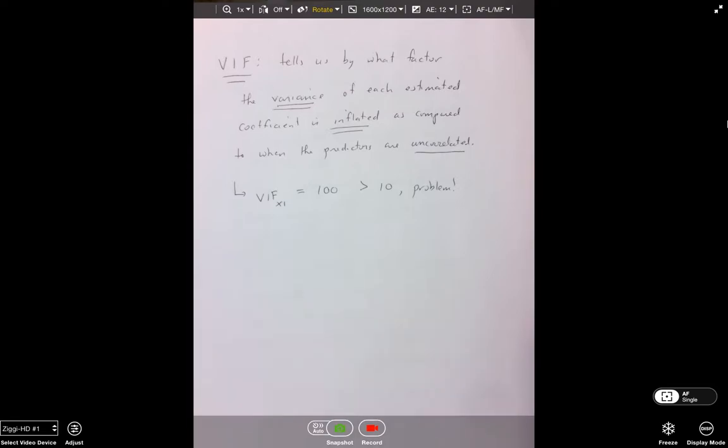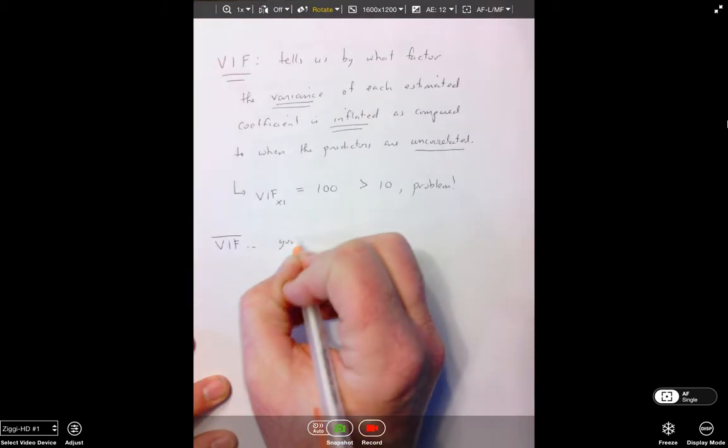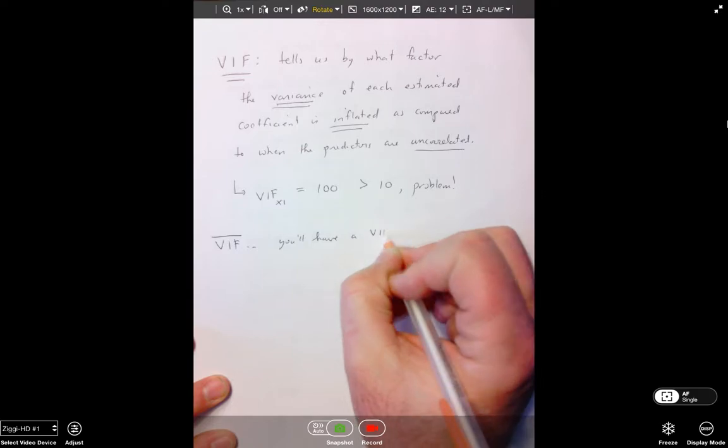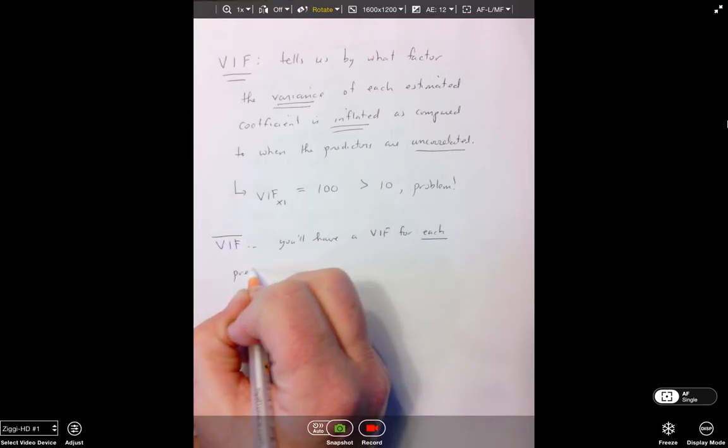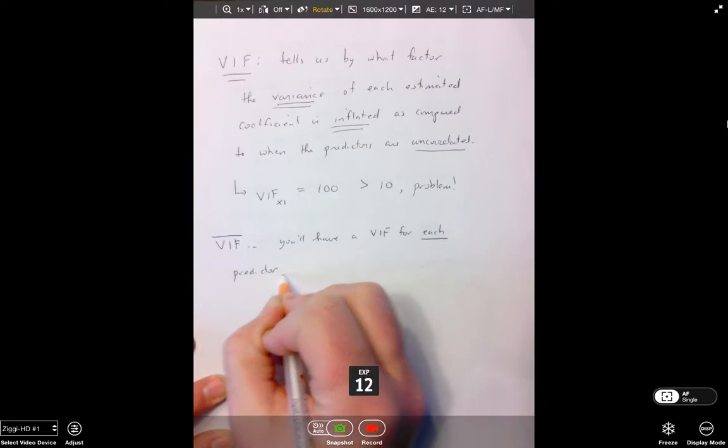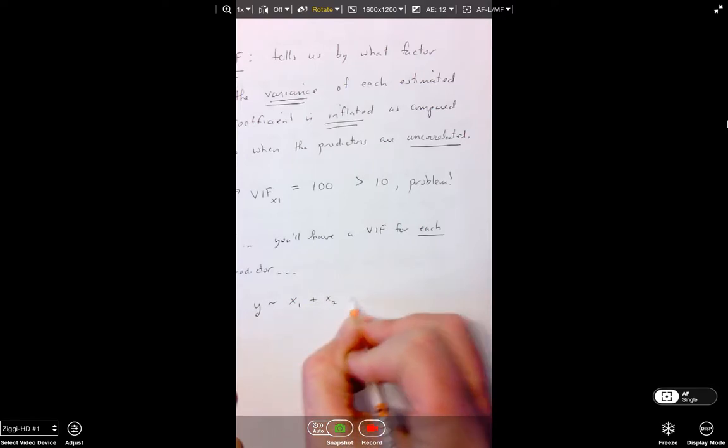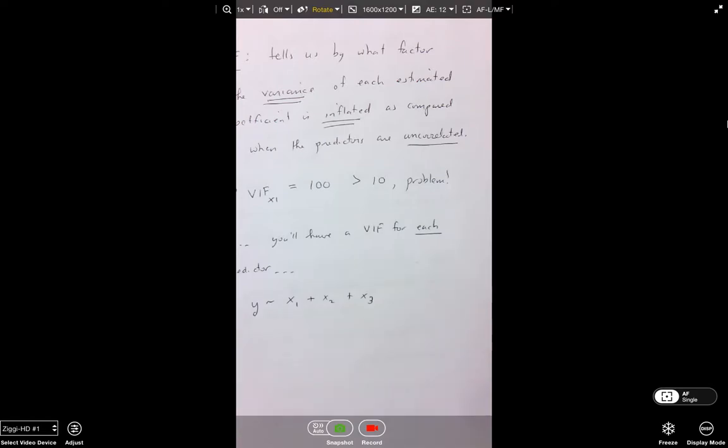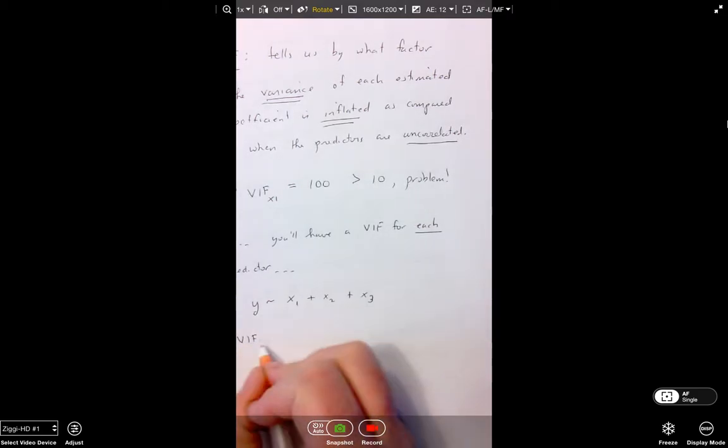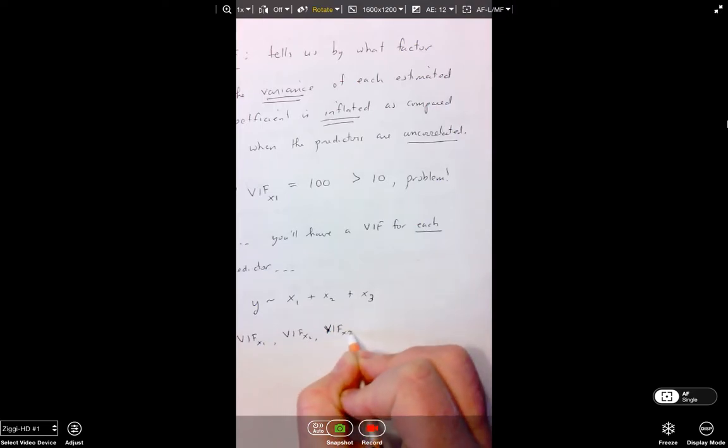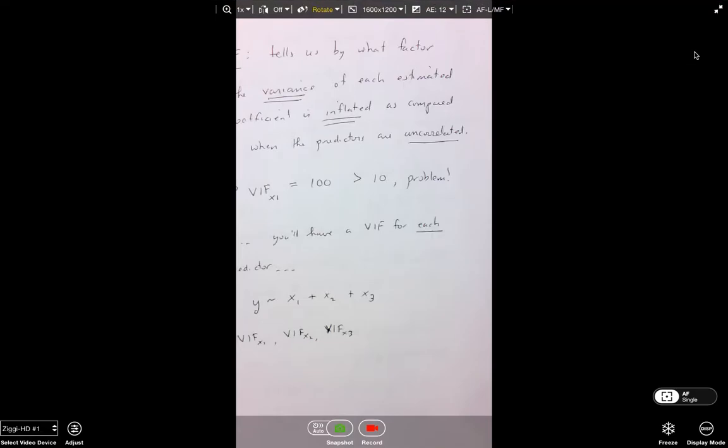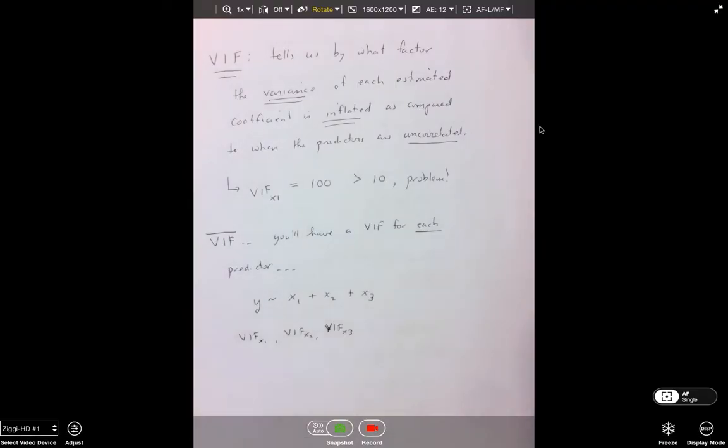Now, another thing that we sometimes look at is we look at the mean variance inflation factor. Now, you'll have a variance inflation factor for each predictor. So clearly if you're predicting y from X1 plus X2 plus X3, then you're clearly going to have a variance inflation factor actually for the four coefficients. You'll have a variance inflation factor for X1, X2, and X3. I thought I had this thing fixed, but apparently I didn't.